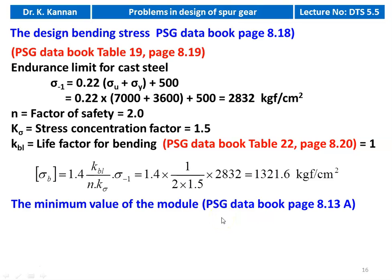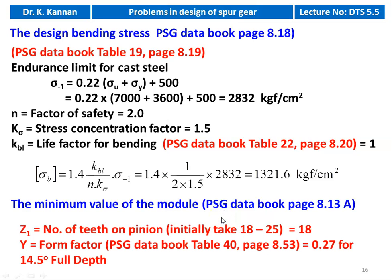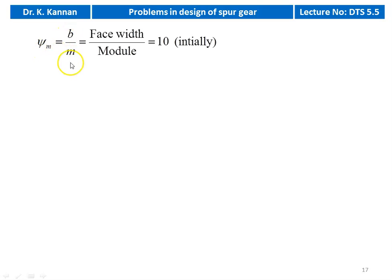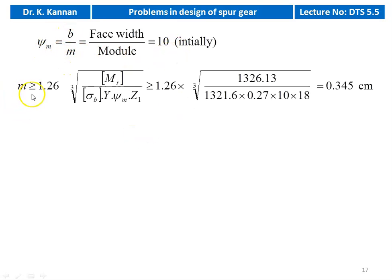Calculate minimum module from PSG Data Book page 8.13. Assume Z1 = 18 (between 18 and 25). Form factor Y = 0.27 for 14.5° full depth gear from table 40. Take ψm = B/m = 10. Module ≥ 1.26 × ∛([MT] / (σb × Y × ψm × Z1)) = 1.26 × ∛(1,326.13 / (1,321.6 × 0.27 × 10 × 18)) = 0.345 cm.